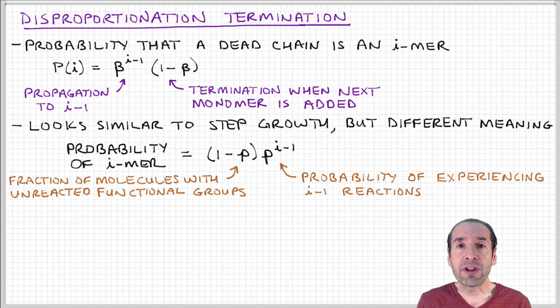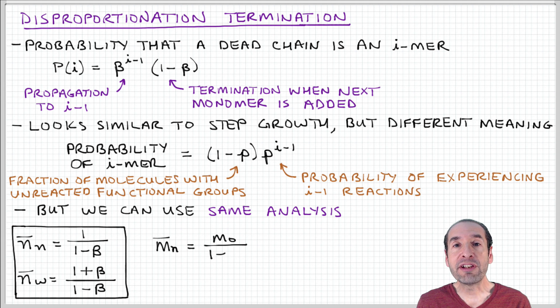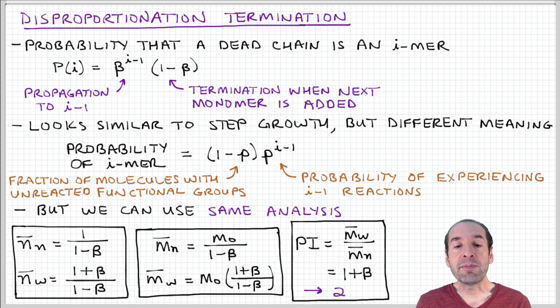These have different meanings, but because they're equivalent and analogous results, they can be treated using the same analysis framework. We obtain the same results for the degree of polymerization molecular weight in terms of β that we obtained for step growth polymerization in terms of P. We have expressions for the number and weight average degree of polymerization, the number and weight average molecular weight. And similarly with step growth, the polydispersity index, which is the ratio of the weight average to the number average molecular weight, equals (1+β). Since for large molecular weight polymers, those correspond to values of β that approach one, this polydispersity index also approaches two.